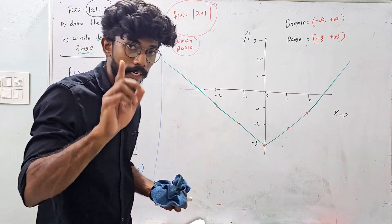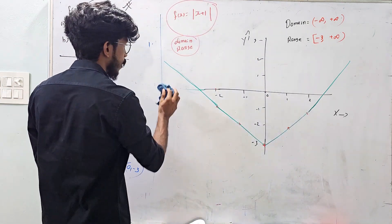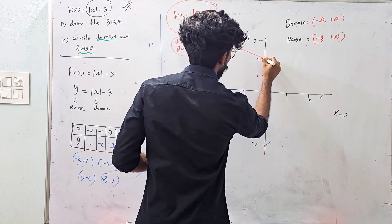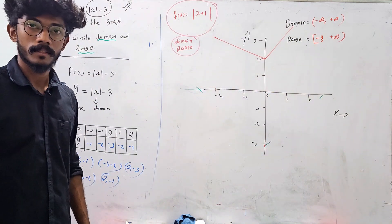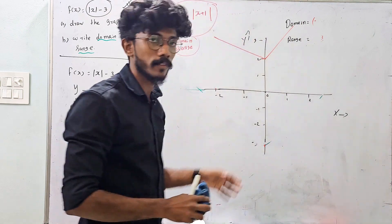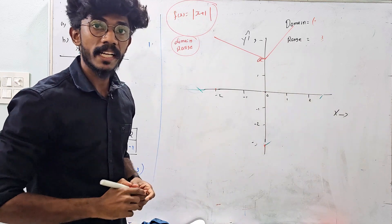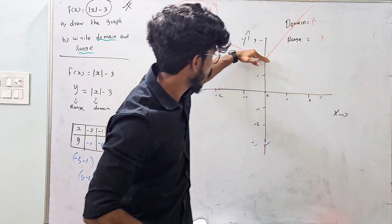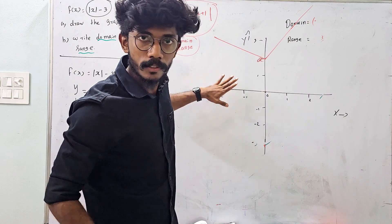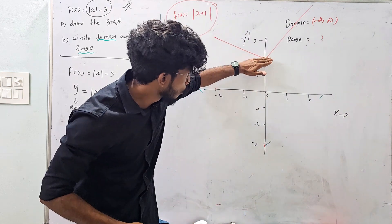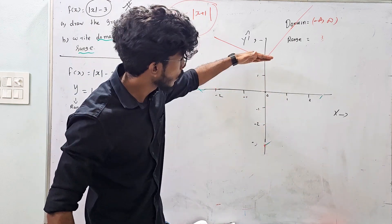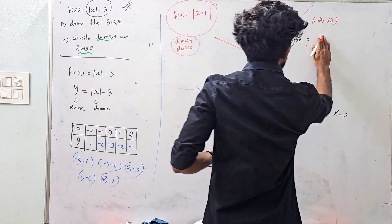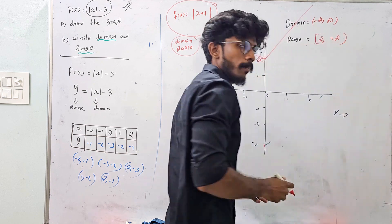Let's see a rough figure. For f of x = mod x plus 1, the domain is equal to minus infinity to infinity. In the range, the minimum value is 1, so the range is 1 to infinity.